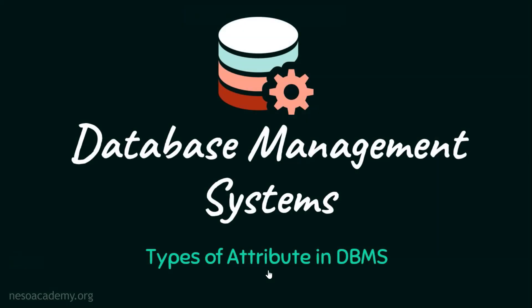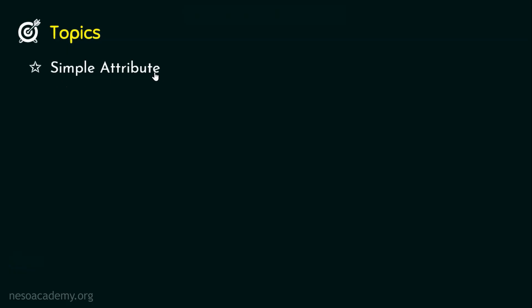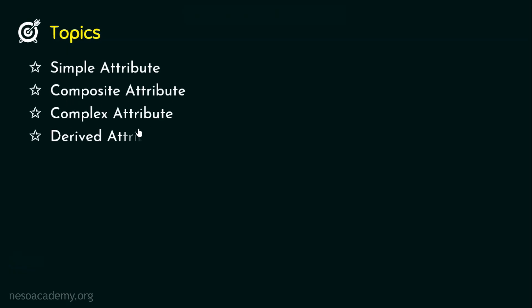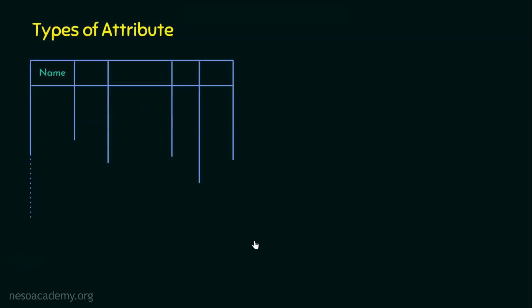Hello everyone, welcome back. In this presentation, let's see the types of attributes in database management system. We are going to cover simple attribute, composite attribute, complex attribute, derived attribute, and finally multi-valued attribute. Let's step into the topic of the day: the types of attributes.